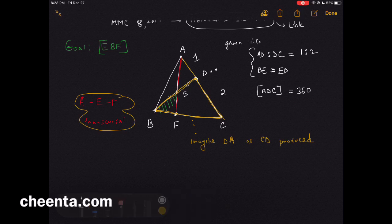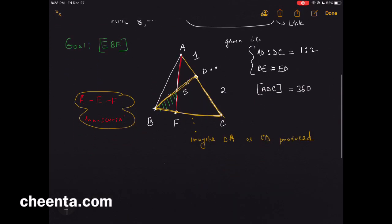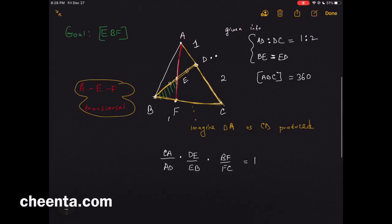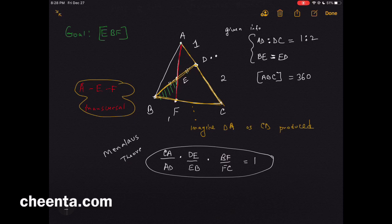You see AEF as a transversal to this yellow triangle. So now applying Menelaus theorem we can say that CA over AD times DE over EB times BF over FC is equal to one. That's the fact using Menelaus theorem. If you do not know this, you can go to the link in the description.